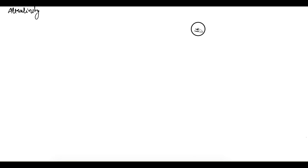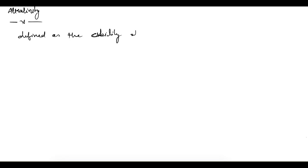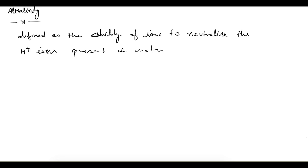Alkalinity is defined as the capacity or the ability of ions to neutralize the hydrogen ions present in water. Hydrogen ions are present due to some acids, so alkalinity is the ability of ions to neutralize the acids present in water. That is the definition. Now the major sources due to which alkalinity occurs are the carbonate ion, hydroxyl ion, and bicarbonate ion.